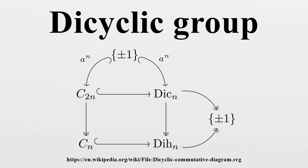For this reason the dicyclic group is also known as the binary dihedral group. Note that the dicyclic group does not contain any subgroup isomorphic to Dₙ. The analogous pre-image construction, using PIN⁺ instead of PIN⁻, yields another dihedral group, DIH₂ₙ, rather than a dicyclic group.